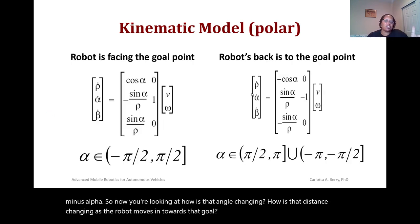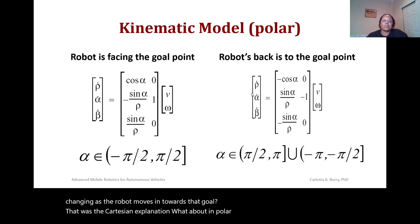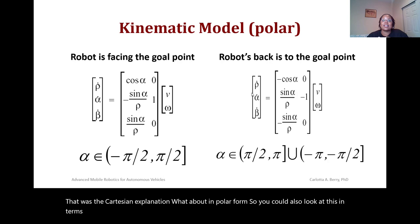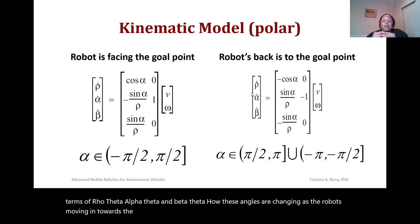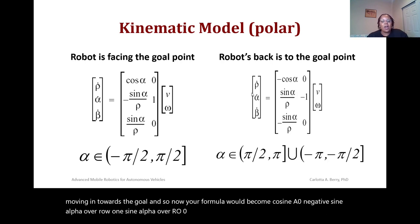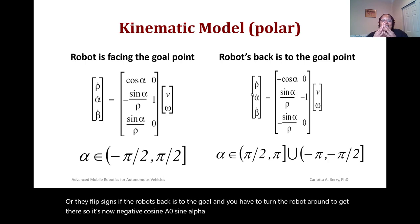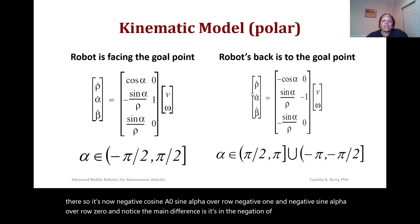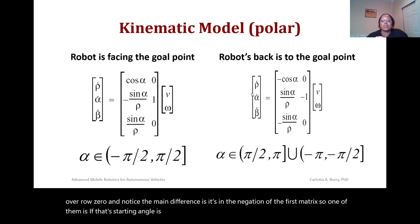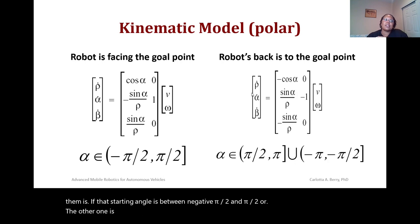That was the Cartesian explanation. In polar form, you look at rho, alpha, and beta as functions of theta, tracking how these angles change as the robot moves toward the goal. The formula becomes: cosine alpha, zero, negative sine alpha over rho, one, sine alpha over rho, zero, times v and omega. If the robot's back is to the goal and it needs to turn around, the signs flip to: negative cosine alpha, zero, sine alpha over rho, negative one, and negative sine alpha over rho, zero. One applies when the starting angle is between negative pi over two and pi over two; the other when it's between pi over two and pi or negative pi to negative pi over two.